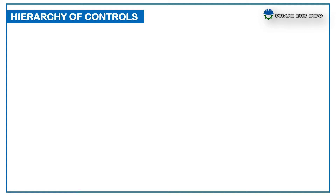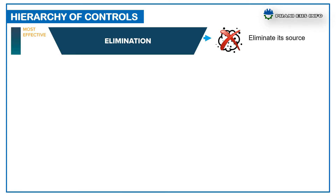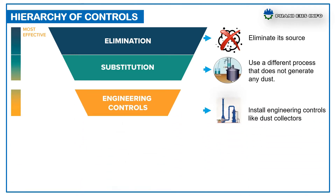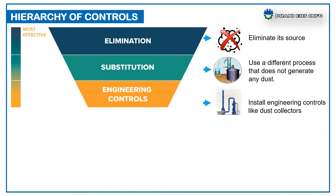Dust control is the most important factor in preventing fires or explosions in any dust-generating workplace. Effective dust control can reduce the risk of catastrophic fire or explosion. The most effective way to reduce the risk associated with combustible dust is to eliminate its source. Next, by using different processes that do not generate any dust. Engineering controls make physical modifications to facilities, equipment, and processes to reduce exposures, such as dust collectors.